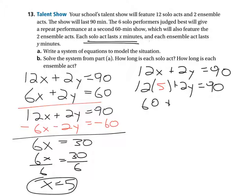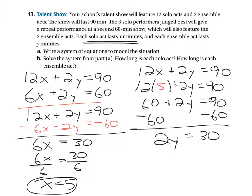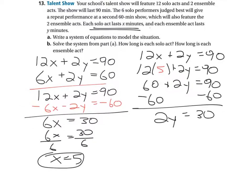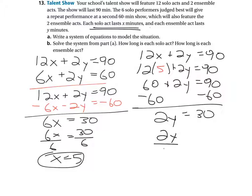12 times 5 is 60 plus 2Y equals 90 and then subtracting 60 from both sides we get 2Y, the two ensemble acts lasting 30 minutes, indicating that when we divide by 2, each ensemble act lasts 15 minutes.